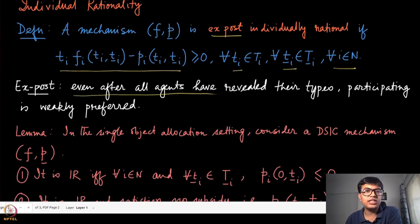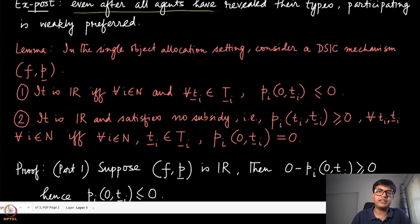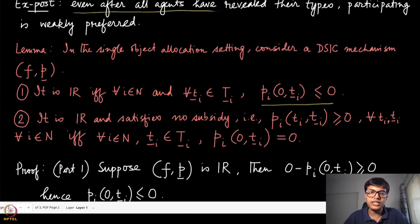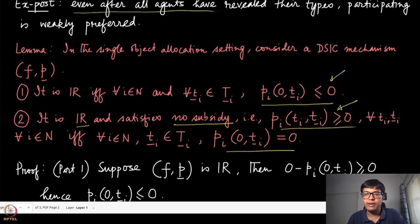What are the implications of individual rationality on Myerson's characterization result? The lemma states: in the single object allocation setting, a DSIC mechanism (f, p) is individually rational if and only if the constant c_i in the integral formula is non-positive. Additionally, if we also want to ensure the no-subsidy condition — that p_i(t_i, t_{-i}) ≥ 0 for all players — then this constant quantity must be exactly equal to zero.